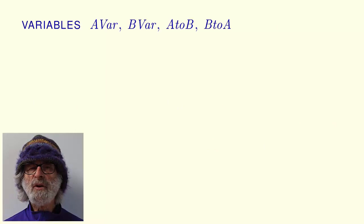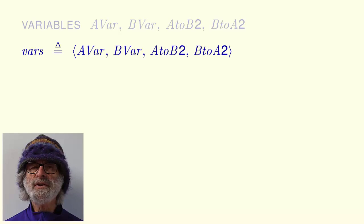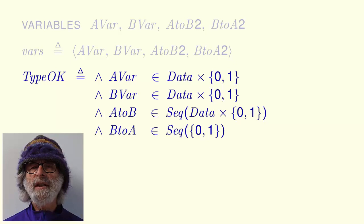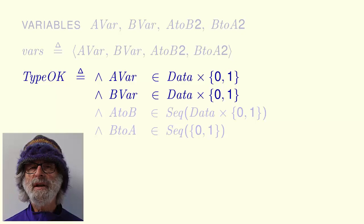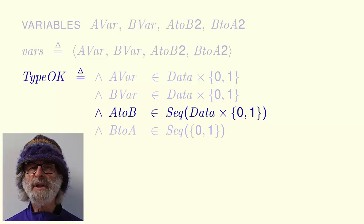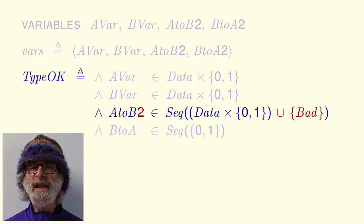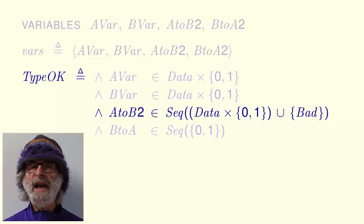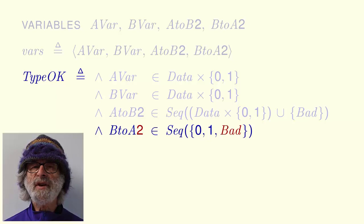The variables Avar and Bvar are the same as in module AB, but the message sequences AtoB and BtoA are renamed AtoB2 and BtoA2. Vars is again defined as the tuple of all variables. The type assertions for Avar and Bvar are the same as in AB. In module AB, AtoB is a sequence of data-bit pairs, while elements of AtoB2 are either data-bit pairs or equal to BAD. Similarly, BtoA of module AB is a sequence of zeros or ones, while BtoA2 is a sequence of the values 0, 1, or BAD.